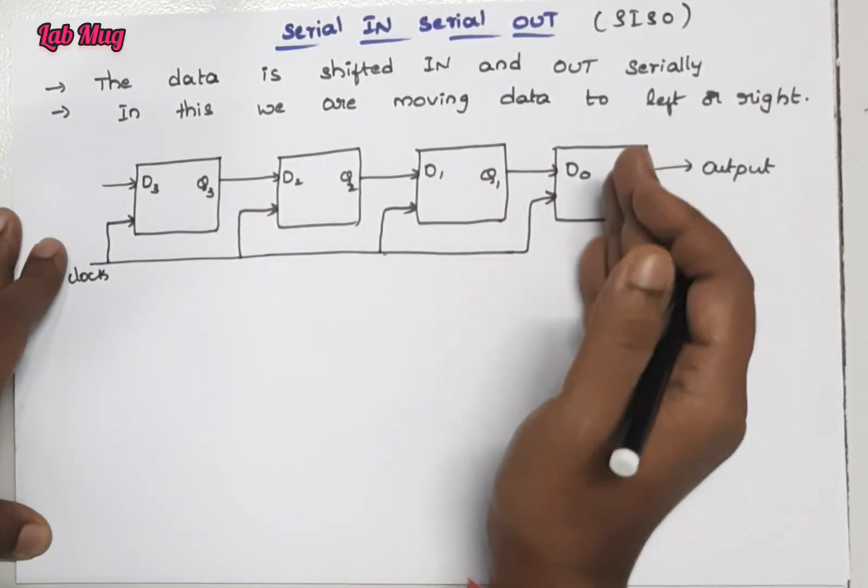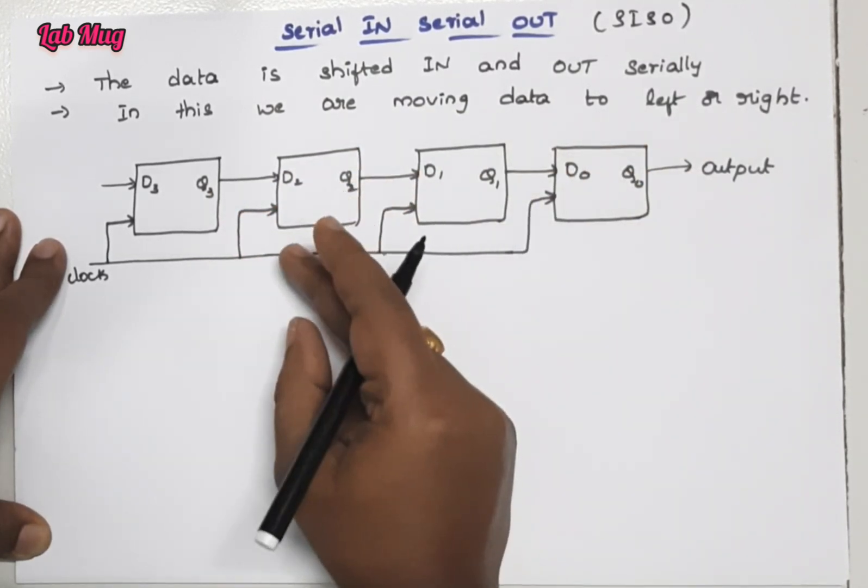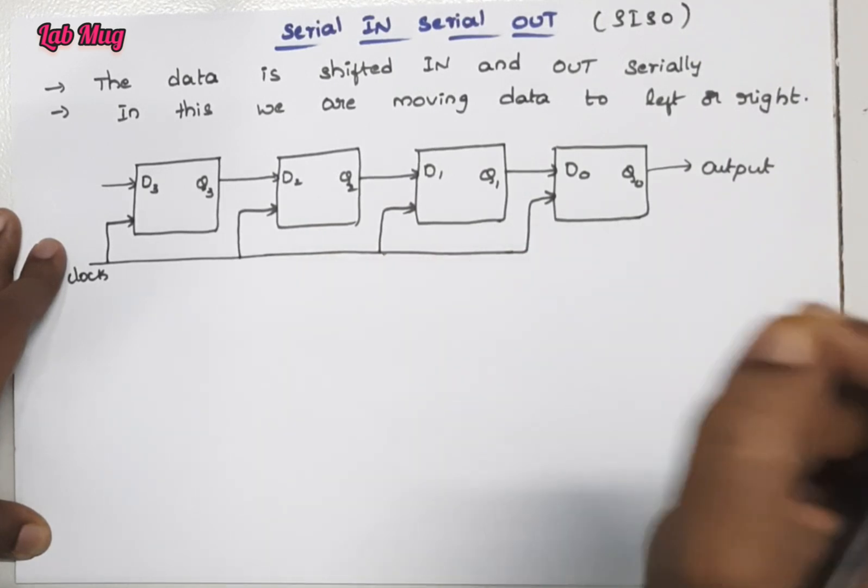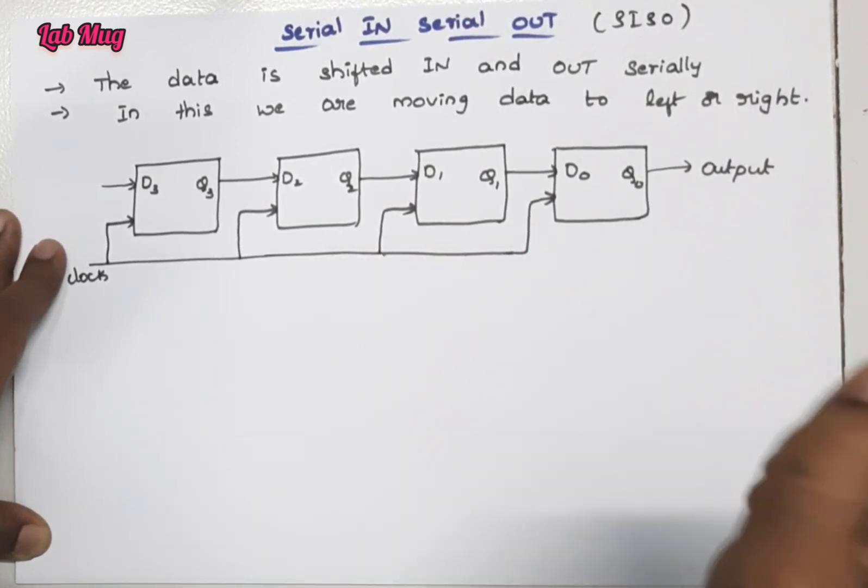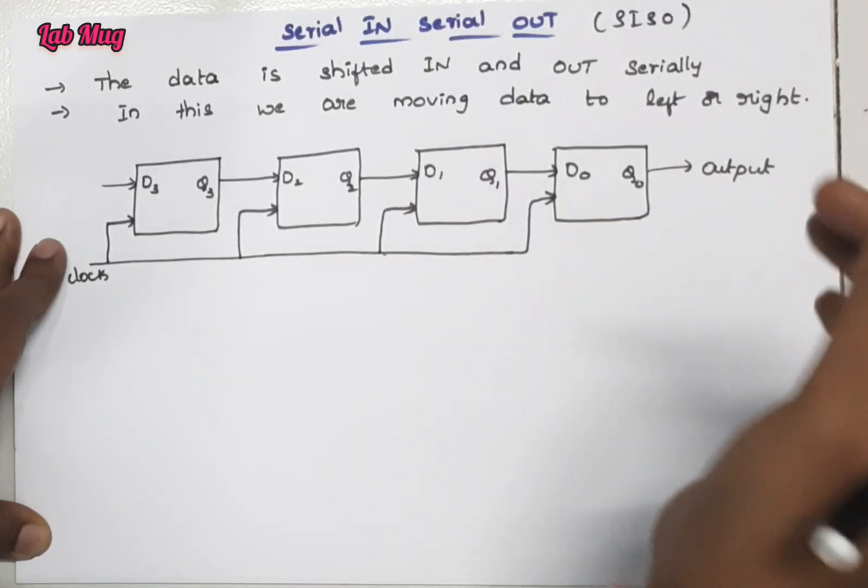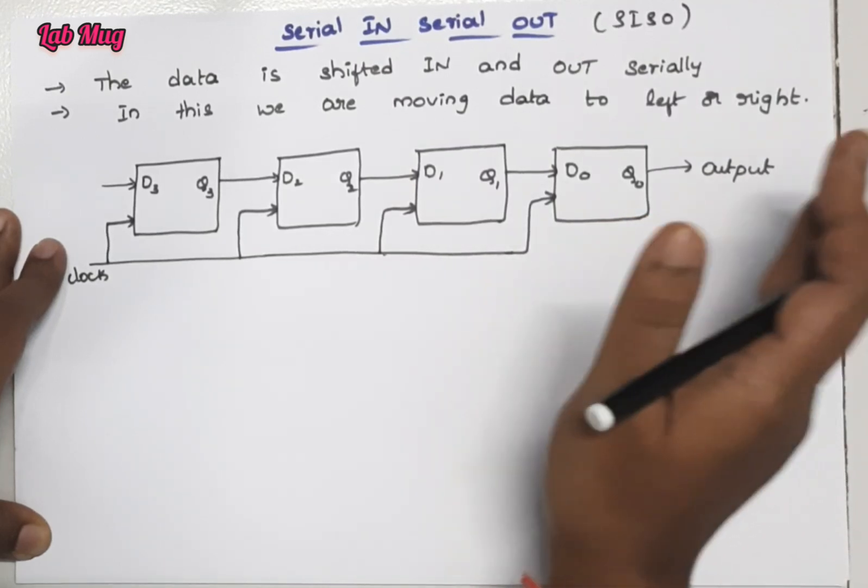We discussed in the previous class about shift left and shift right operations. These are two things we perform in shift registers.